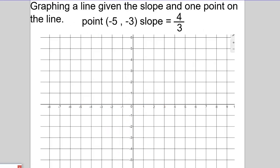For our last slide, we're going to graph a line given the slope and one point that is on the line. So our starting point is going to be negative 5 and negative 3. So negative 5, negative 3 is right here. And we know that that point is on the line.